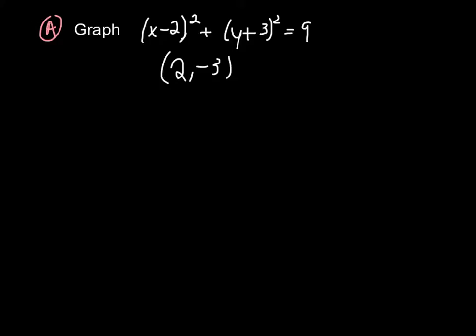Our h, k is the center. We know that 9 is in the place of our r squared, so r squared equals 9. Therefore, r or radius is 3.